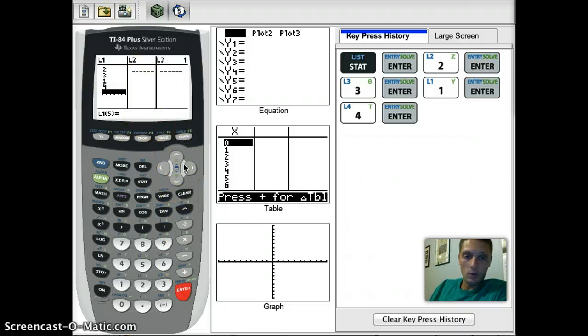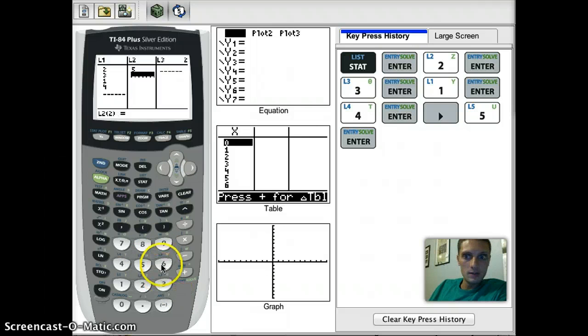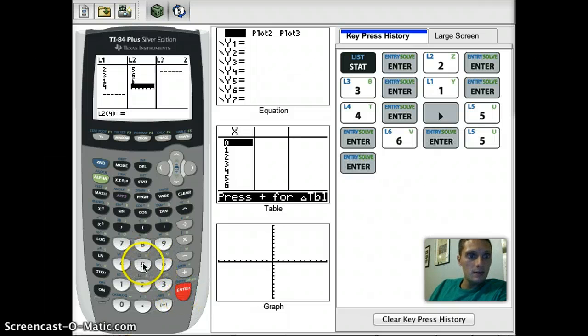Now I want to put in the L2 or the Y values, the second set of numbers. I'm going to move over on my cursor. My second numbers are five, six, five, and five.